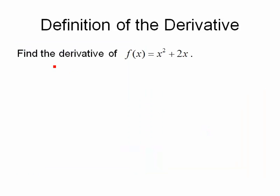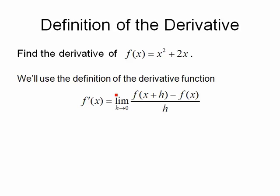Let's go ahead and find the derivative of the function f of x equals x squared plus 2x. We're going to start from our definition of a derivative. So the limit as h approaches 0 of f of x plus h minus f of x divided by h. We're going to work out the pieces in the difference quotient and then take the limit.